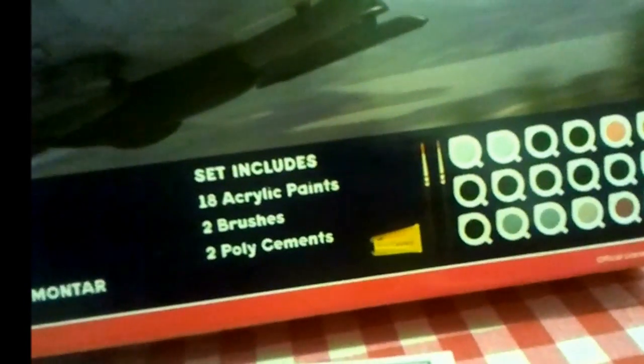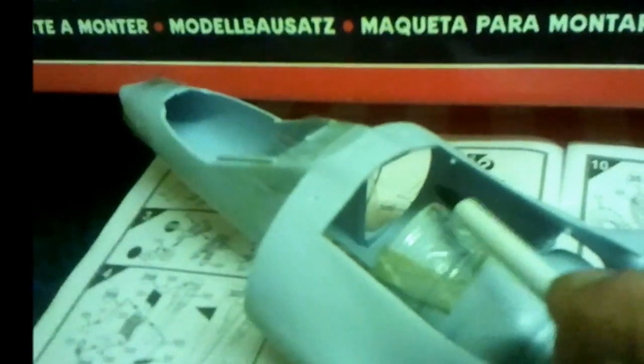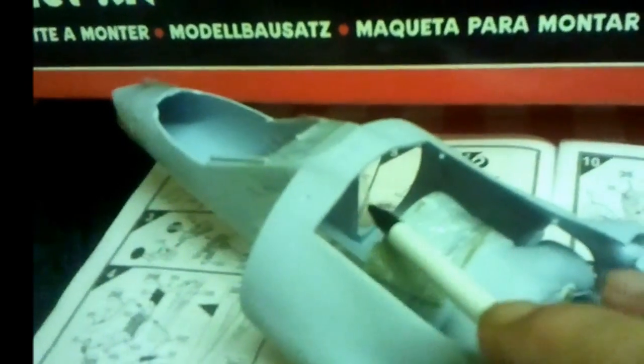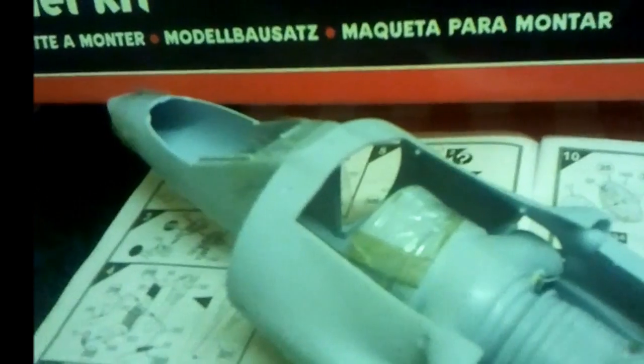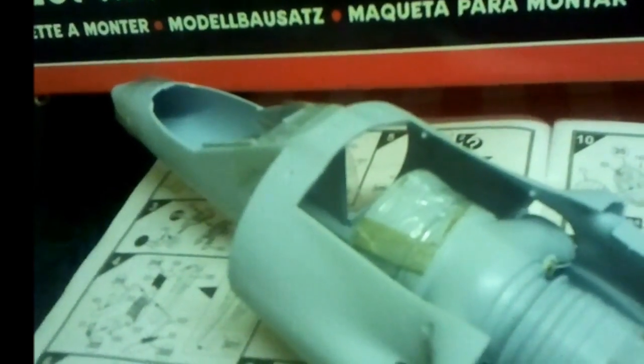So what I might do on the actual model is fit a bar across there, just there, fit a bar across in front of the EDF and then fix the actual fan from the model that you get onto it via with a little screw,